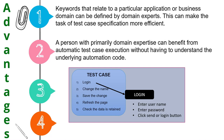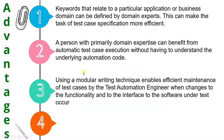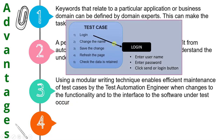So the second advantage is: if a person knows the domain, they can write the test cases without having to understand the underlying automation code. The third advantage is that using a modular writing technique enables efficient maintenance of test cases by the test automation engineer when changes to functionality or the interface to the software under test occur. Once we define the keyword and use it in test cases, if the functionality of the keyword changes in future, it will not affect the test case — we only have to change the keyword's implementation, which enables efficient maintenance.